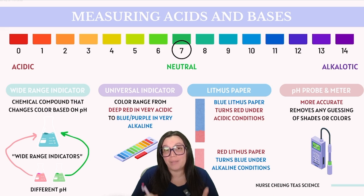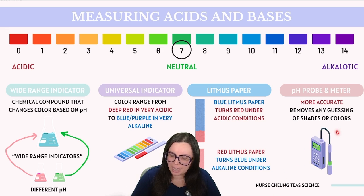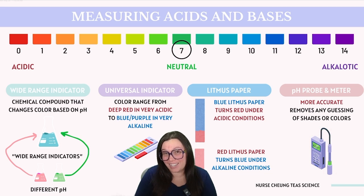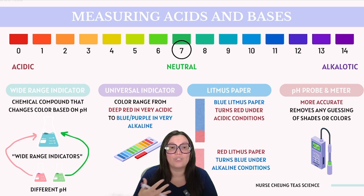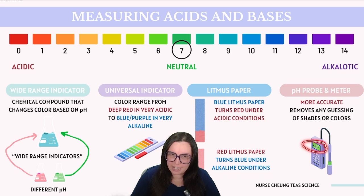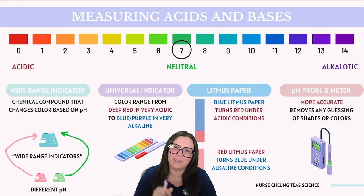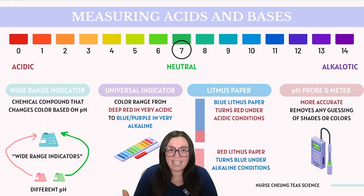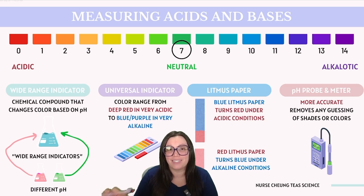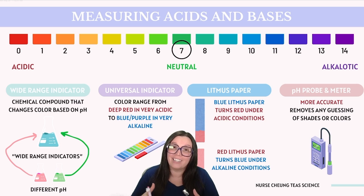Another method for measuring pH is a pH probe attached to a pH meter. This technique involves inserting a probe into a solution to electronically determine its pH level. The meter's digital display provides a precise numerical reading. The advantage of using a pH probe over other indicators is its accuracy and precision, as it eliminates the subjectivity of interpreting color changes.